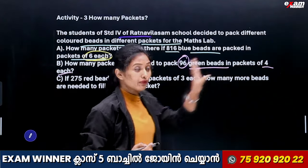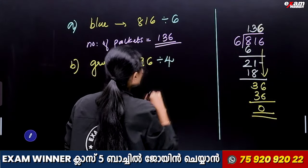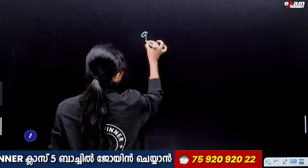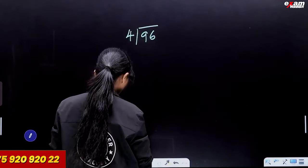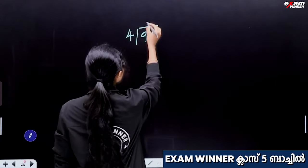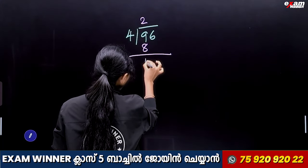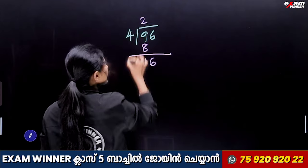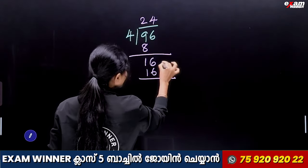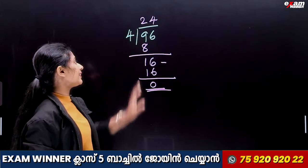4 beads in one packet. 96 divided by 4. 4 twos are 8. 9 minus 8 is 1. Bring down 6. 4 fours are 16. 16 minus 16 is 0. So the answer is 24.